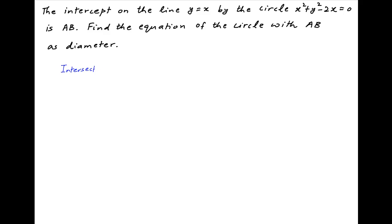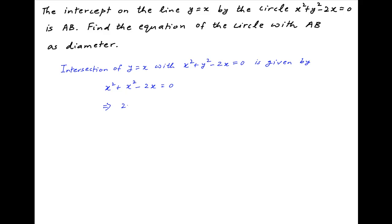The points of intersection of the line y = x with the circle x² + y² - 2x = 0 is obtained by replacing y with x in the equation of the circle. Therefore we get x² + x² - 2x = 0, which implies 2x² - 2x = 0, or 2x(x - 1) = 0, which implies either x = 0 or x = 1.